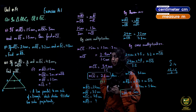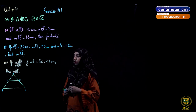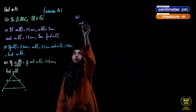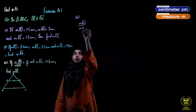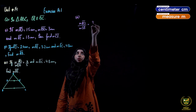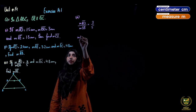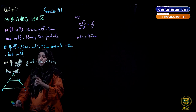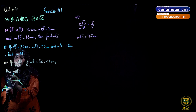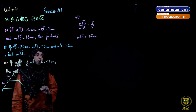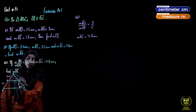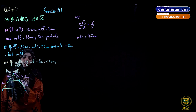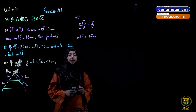We have completed the second part. Now we solve the third part. In the third part: measure AD upon measure DB = 3 upon 5, and measure AC = 4.8 centimeters. From the figure, AD = 3 cm and DB = 5 cm, and the full length AC = 4.8 cm is given. Neither AE nor EC is individually given.